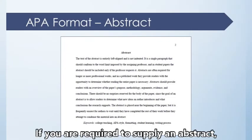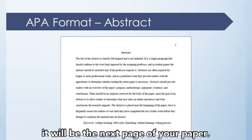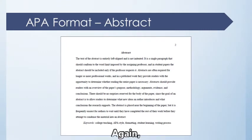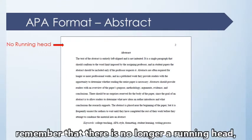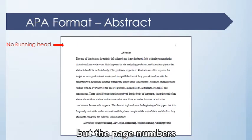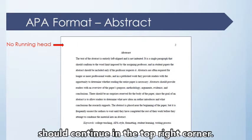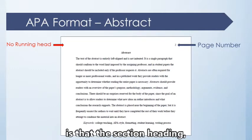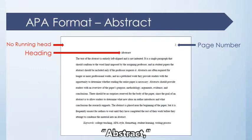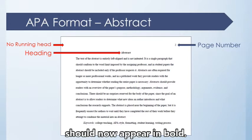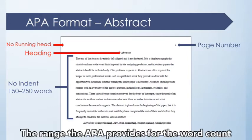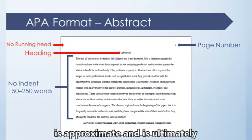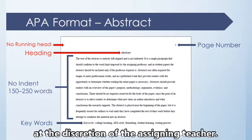If you are required to supply an abstract, it will be the next page of your paper. Remember that there is no longer a running head, but page numbers should continue in the top right corner. The only specific formatting change to the abstract is that the section heading 'Abstract' should now appear in bold. The range the APA provides for the word count is approximate and is ultimately at the discretion of the assigning teacher.